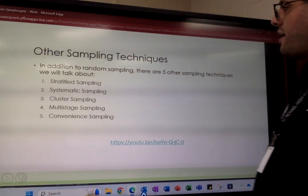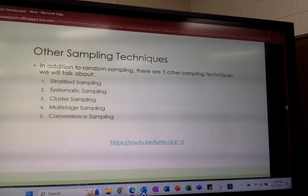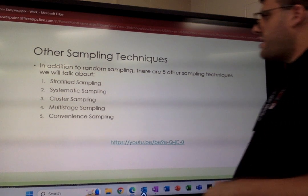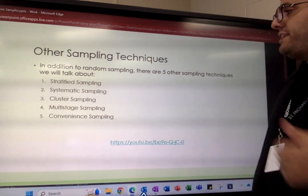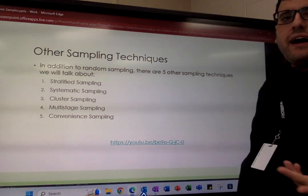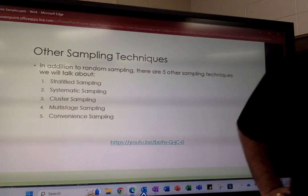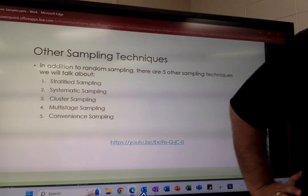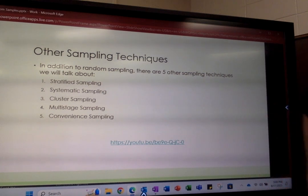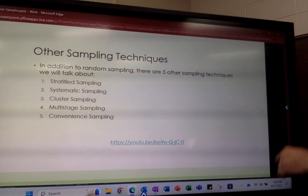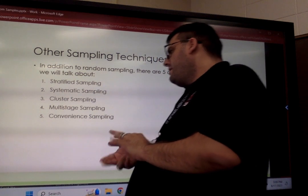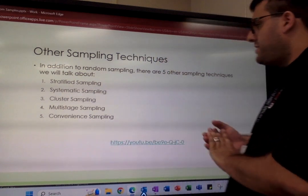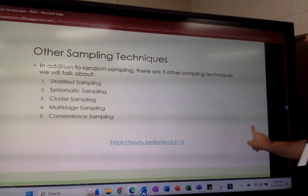Other than random sampling, there are other sampling techniques we're going to cover. We'll talk about the process for each one and the pros and cons for each one. The techniques are: stratified sampling, systematic sampling, cluster sampling, multistage sampling, and convenience sampling.